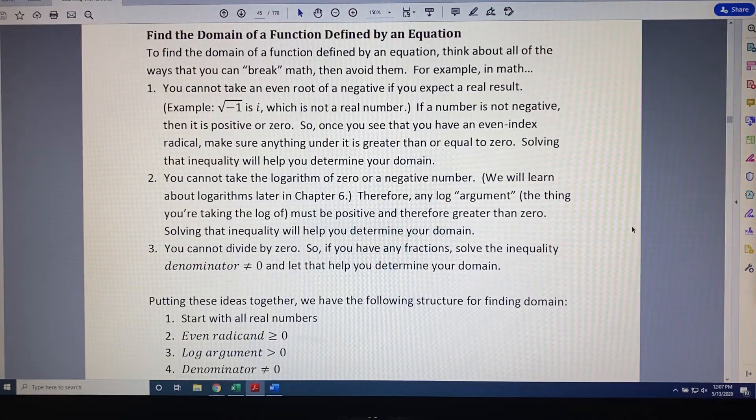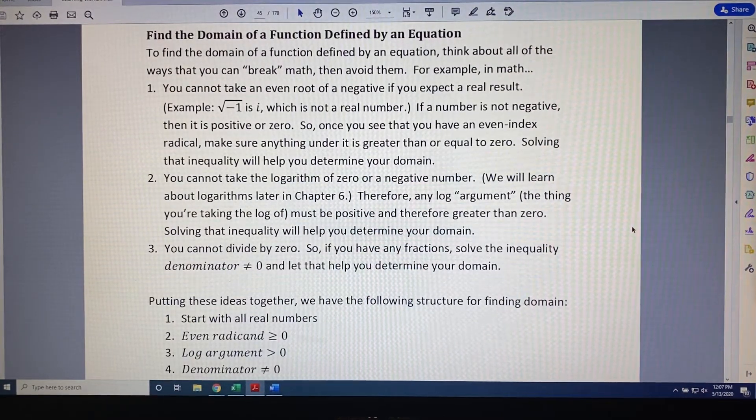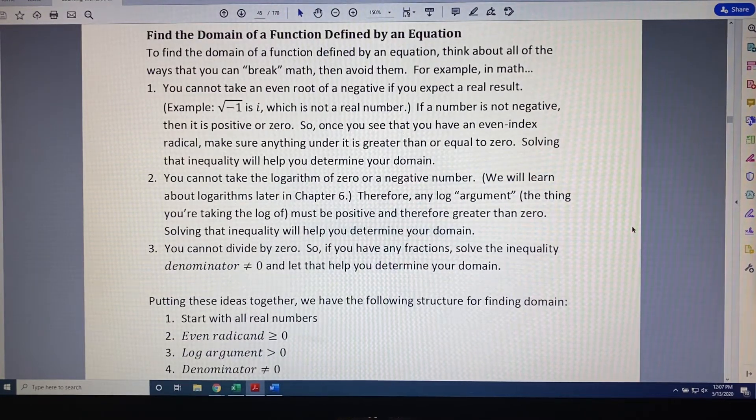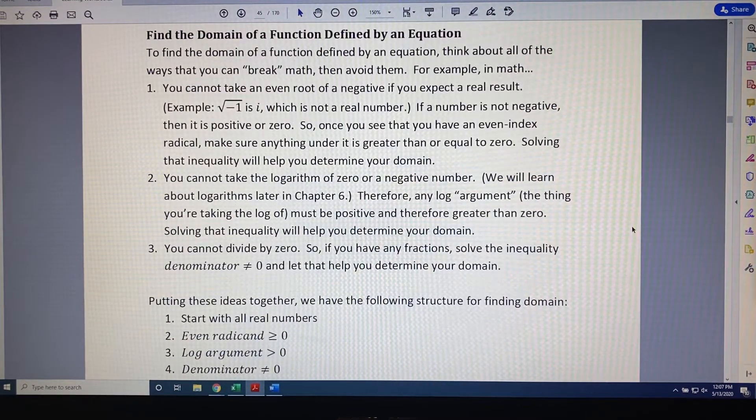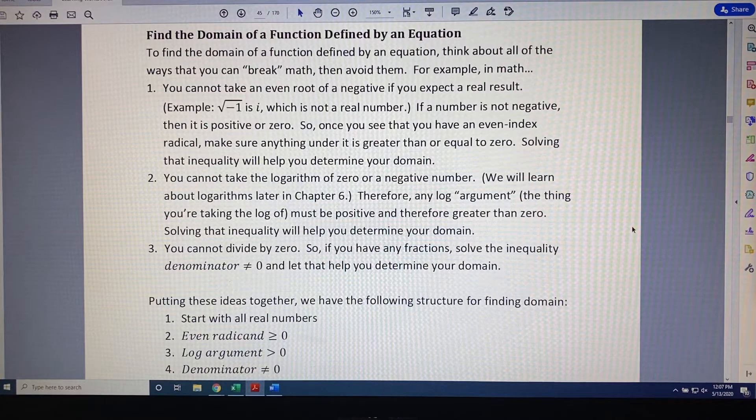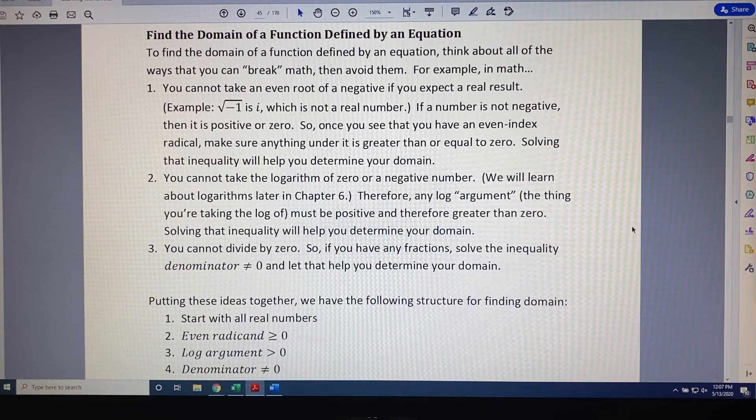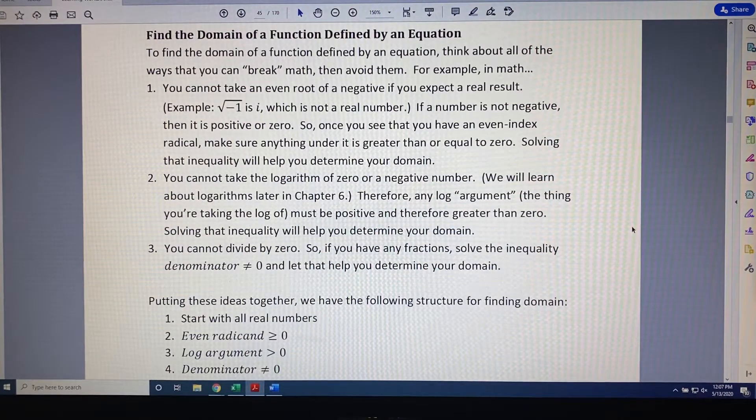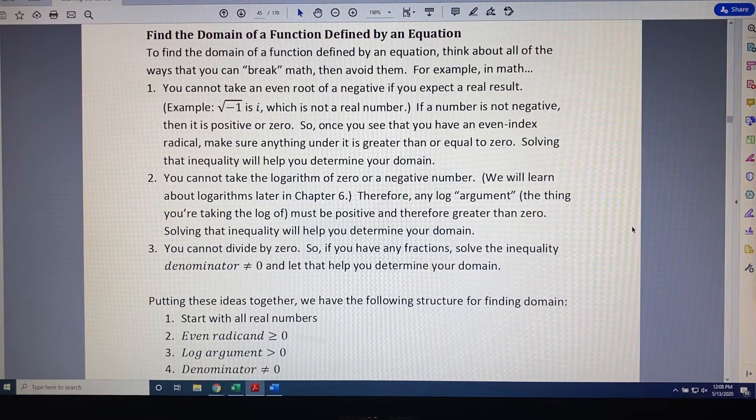For example, in math, you cannot take an even root of a negative if you expect a real result. For example, the principal square root of negative 1 is i, which is not a real number. If a number is not negative, then it is positive or zero. So once you see that you have an even index radical, make sure anything under it is greater than or equal to zero. Solving that inequality will help you determine your domain.